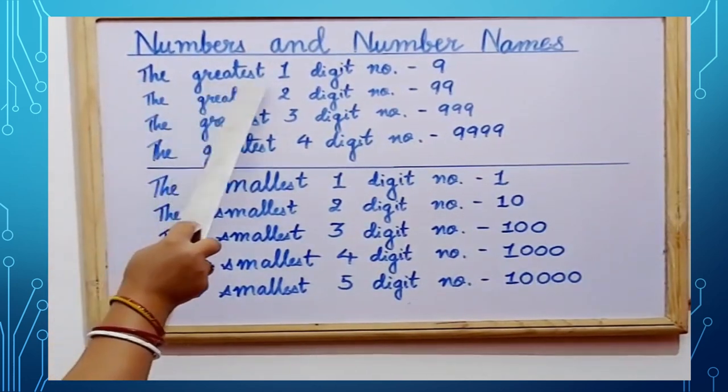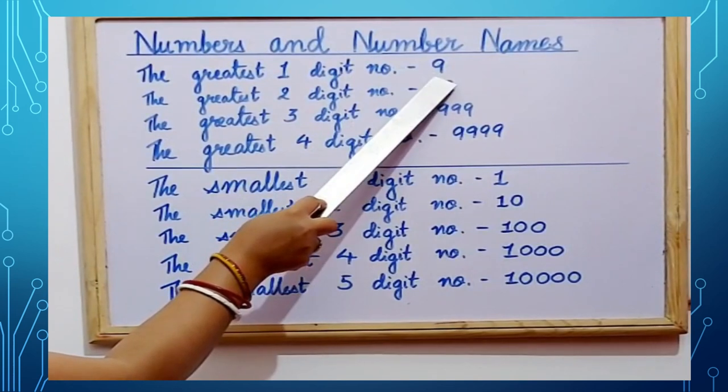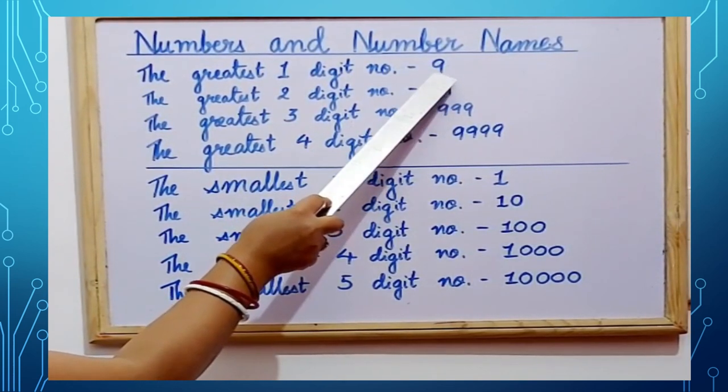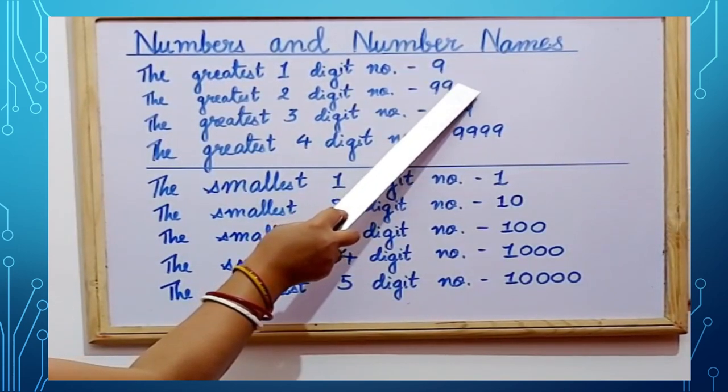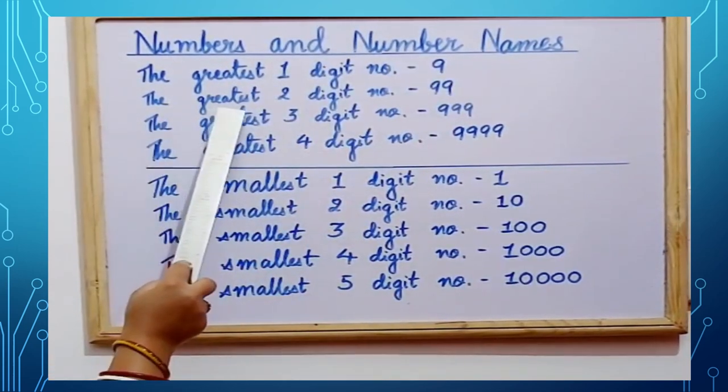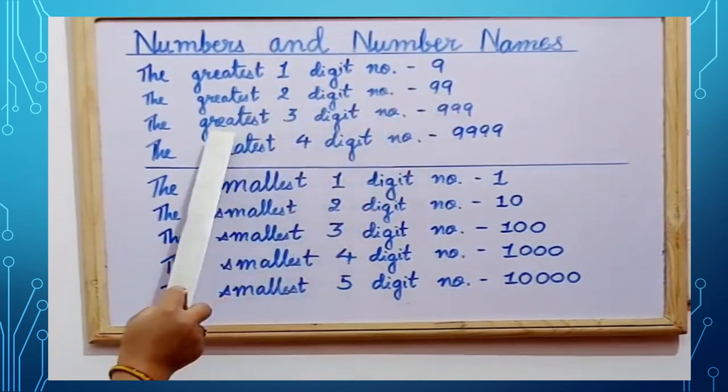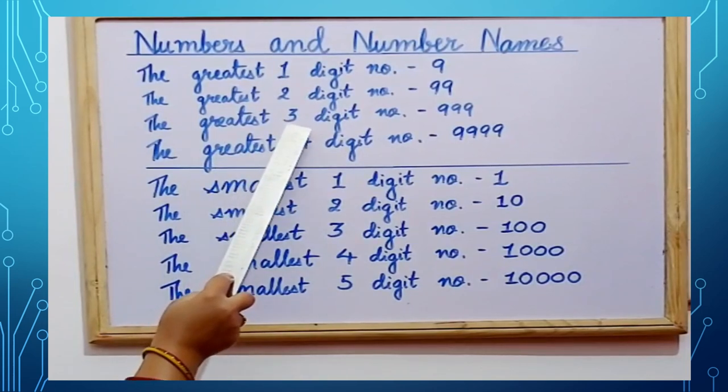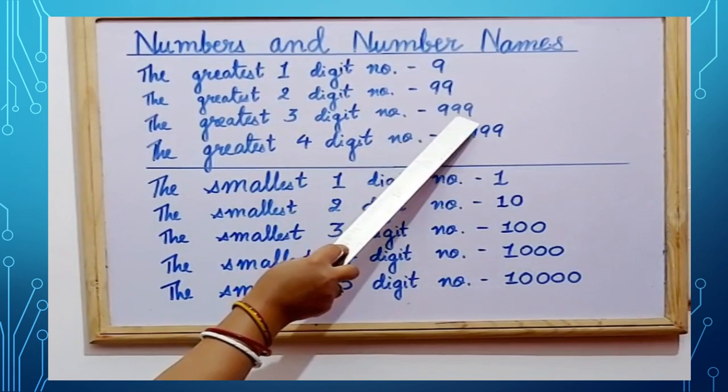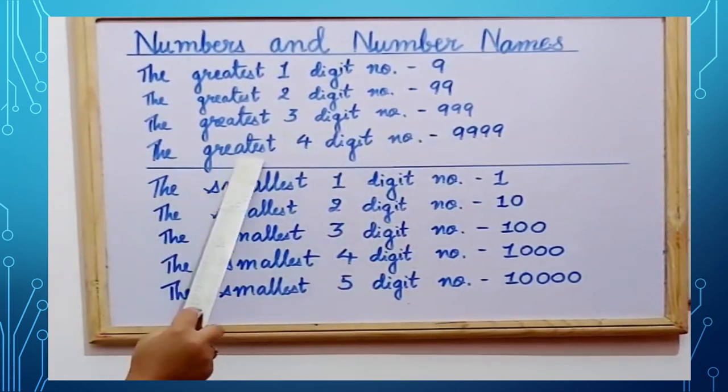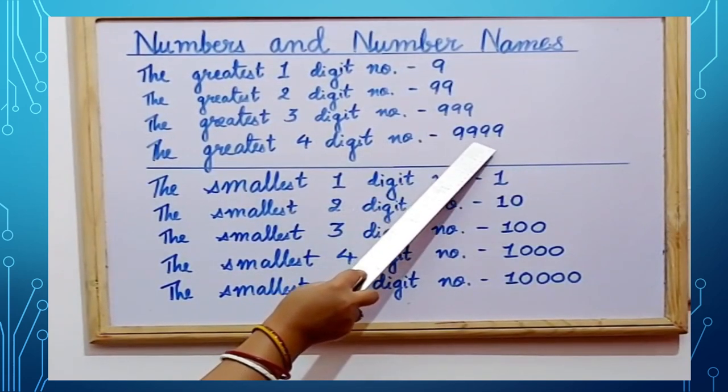The greatest one-digit number is 9. Why is it 9? Because after 9, it is 10 which is a two-digit number. So, the greatest two-digit number is 99. In the same manner, the greatest three-digit number will be 999 and the greatest four-digit number is 9,999.